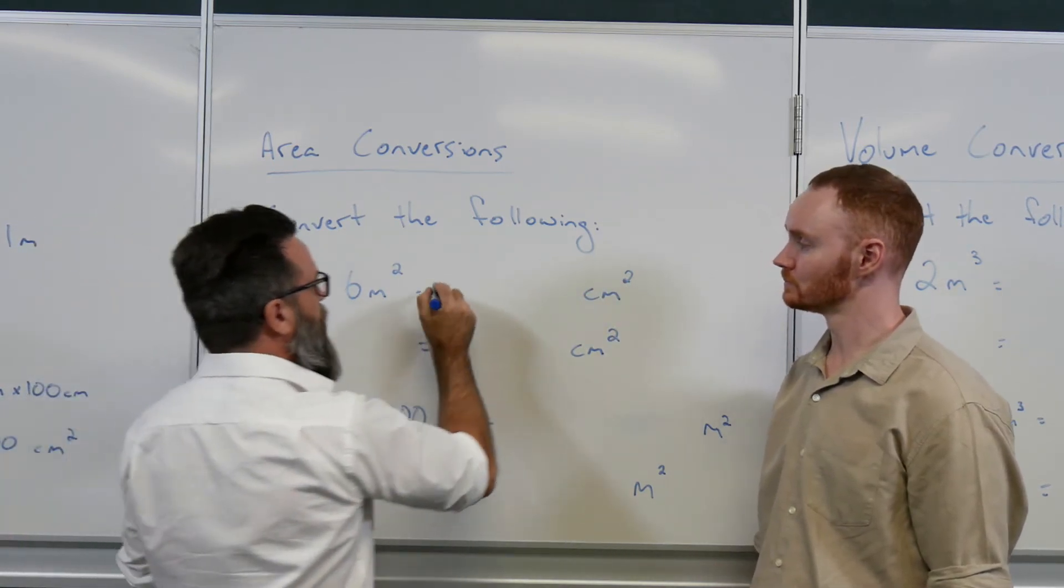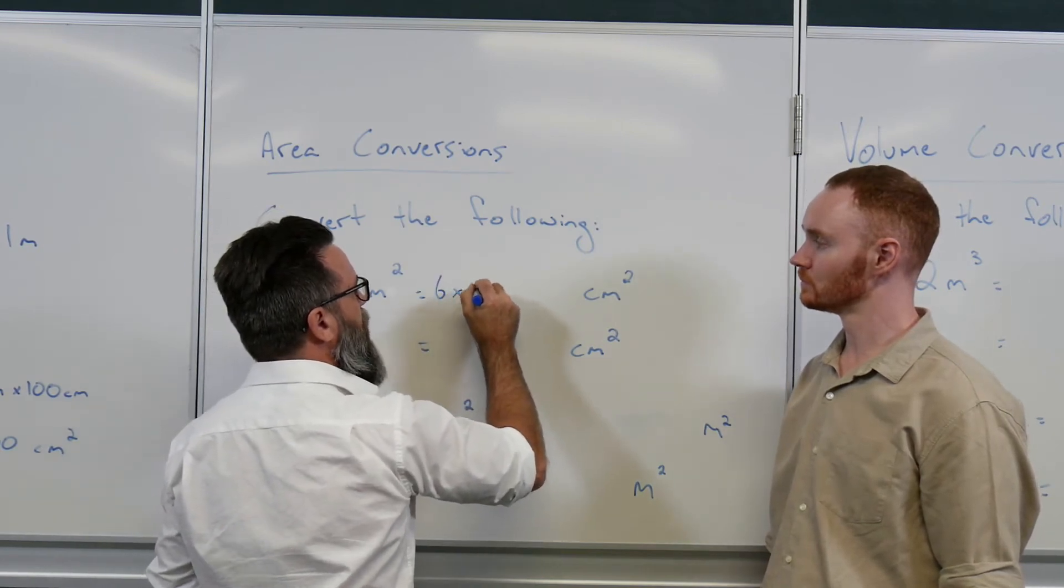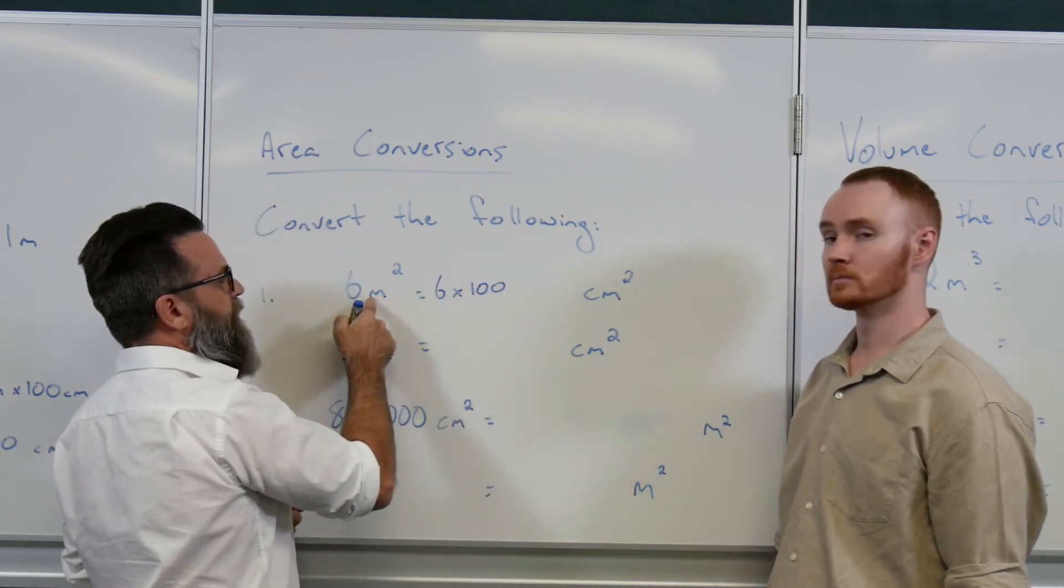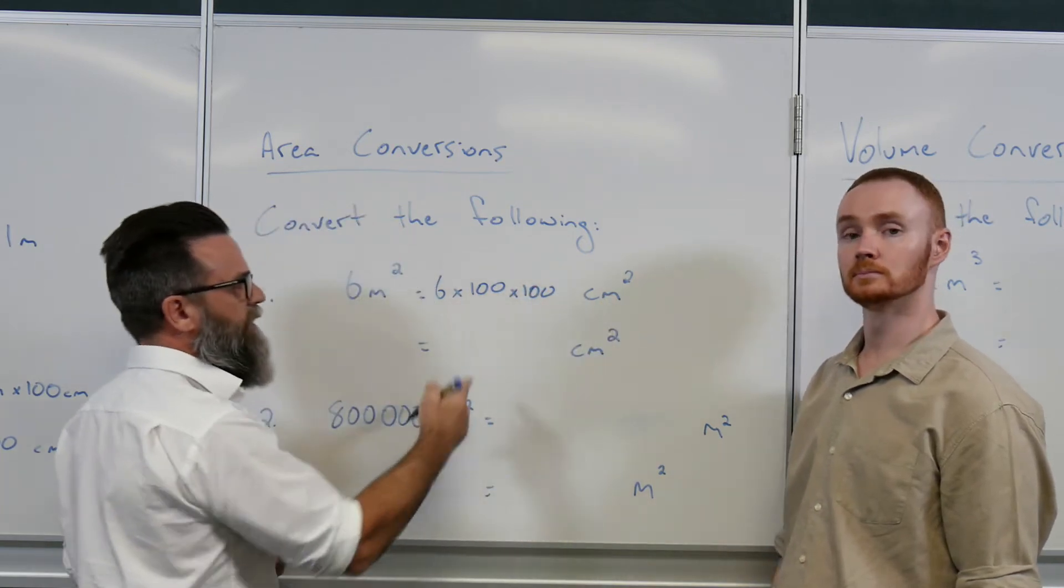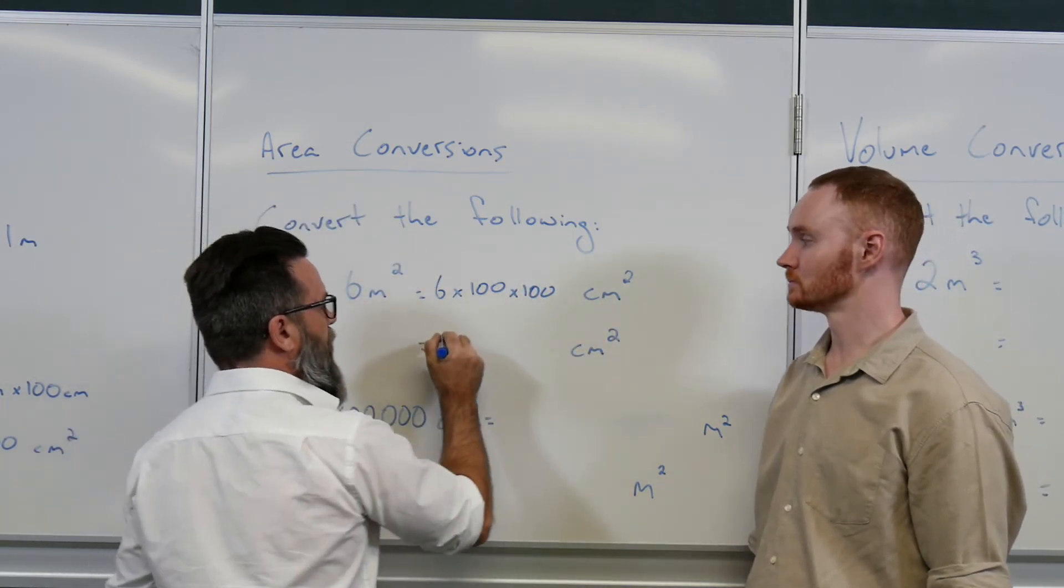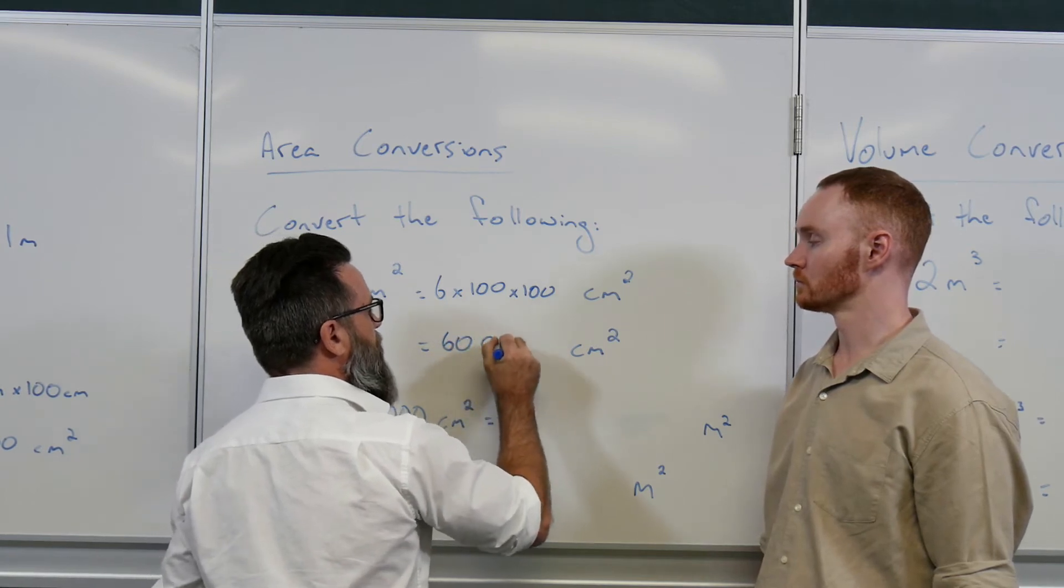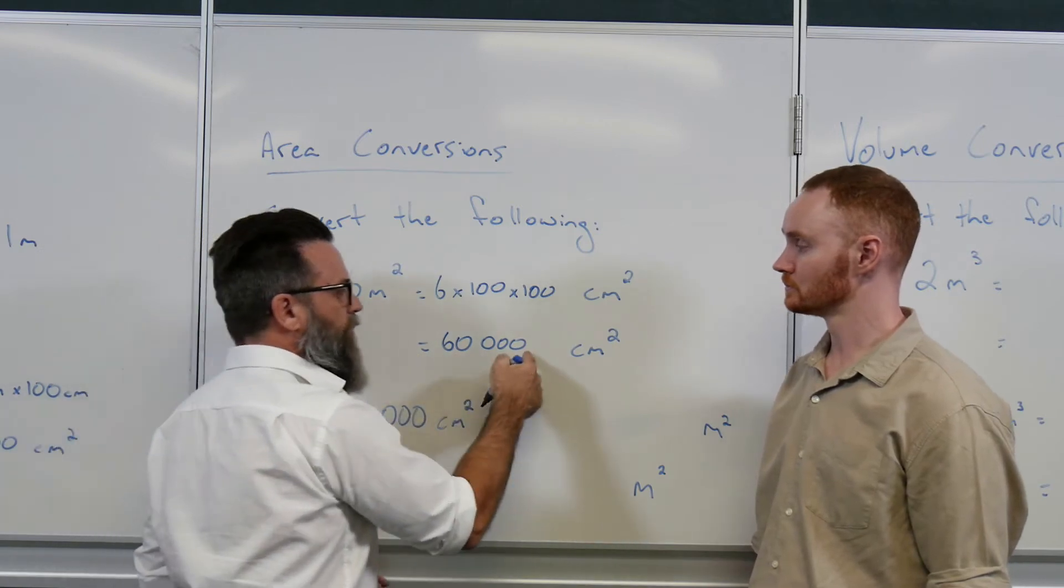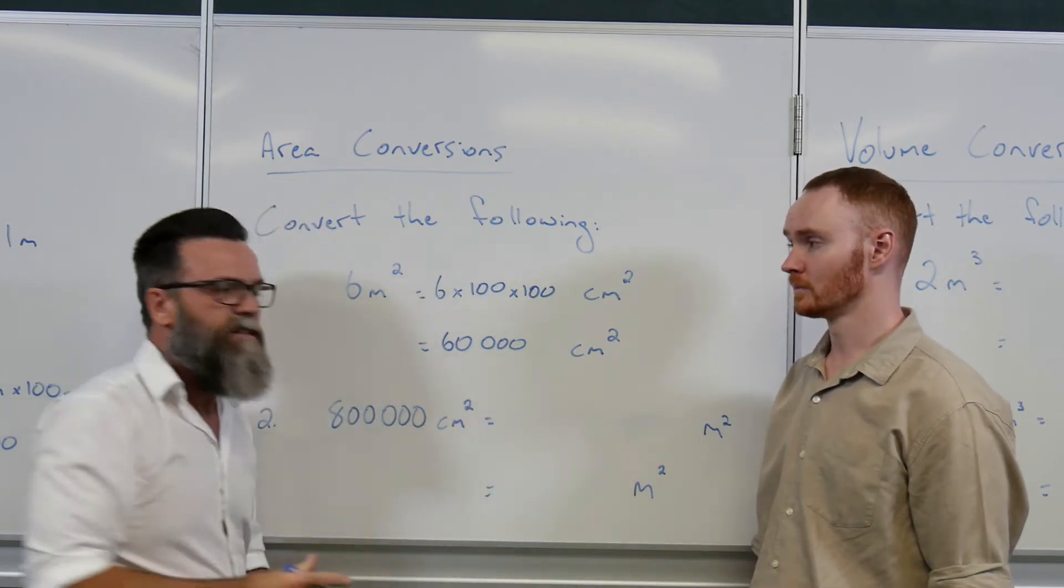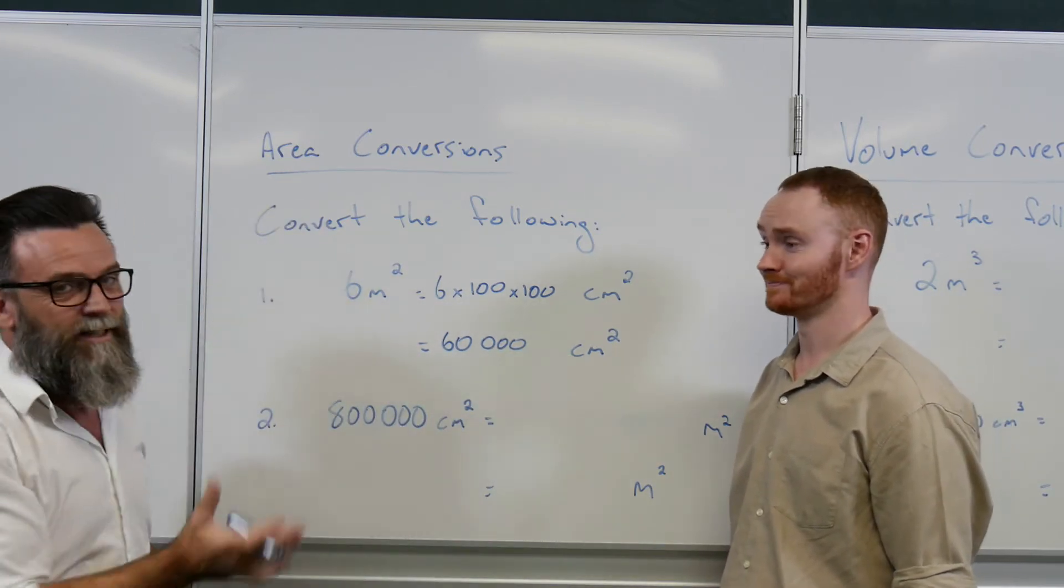So I simply take the number at the front, six, and I multiply that by 100 one time to get it into the centimeters, multiplied by a hundred again to get it into centimeters squared. Multiply all that out and we have 60,000 centimeters squared. So it means six meters squared actually equals 60,000 centimeters squared.